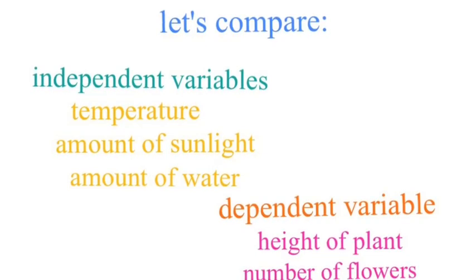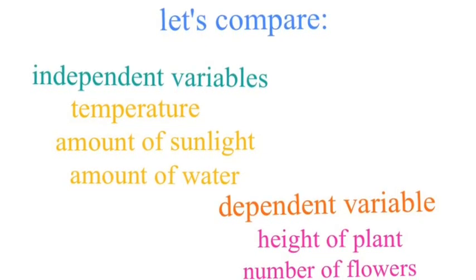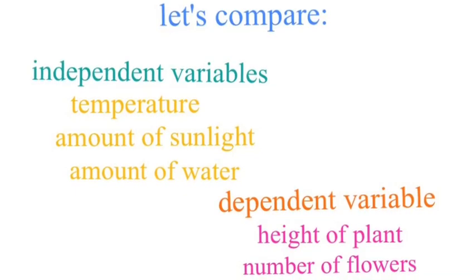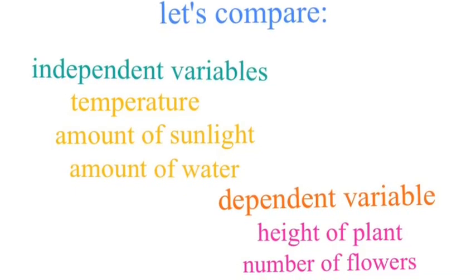Okay, so let's compare some of these. Independent variables are things like temperature, amount of sunlight, and amount of water. Things you can change. I know you might be going, well, how do you change the temperature in a forest?